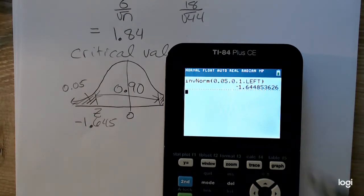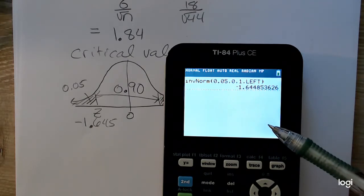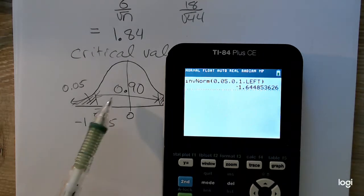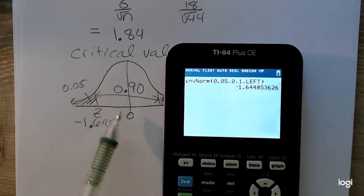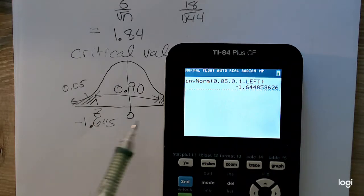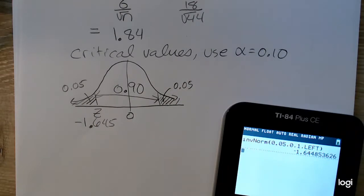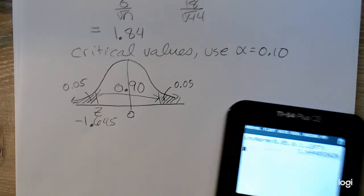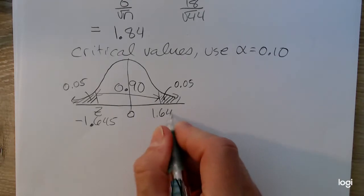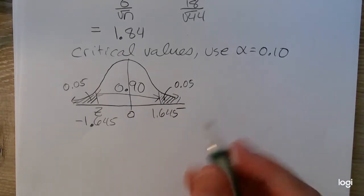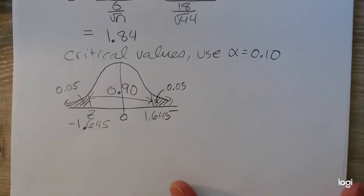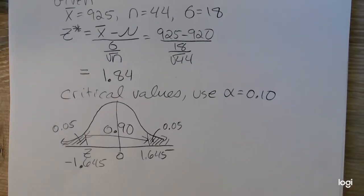If you have a newer TI-84, you might have noticed in that inverse normal menu there was the center option. You could have put in 0.9, the amount of area that's symmetric about zero, and it would have outputted the two critical values. Now that I found the lower critical value by symmetry, the upper critical value is going to be positive 1.645. So our two critical values are plus or minus 1.645.